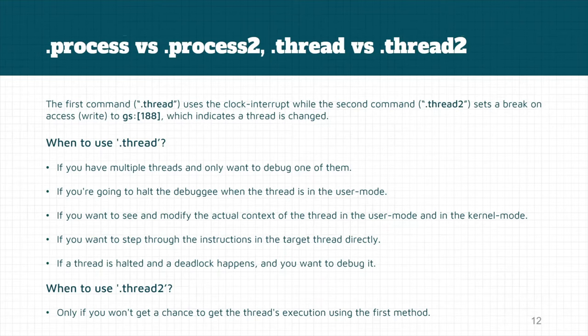If you want to step through instructions directly, use .thread. If the thread is halted and a deadlock occurs — for example to debug deadlocks in your target application — again you should use .thread. .thread /2 is only useful if you couldn't get a chance to catch the thread execution using the first method. In general, it's highly recommended to use .thread instead of .thread /2.